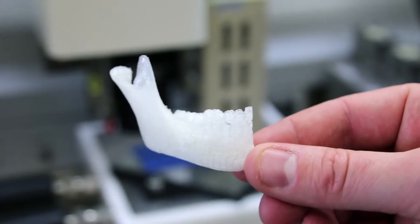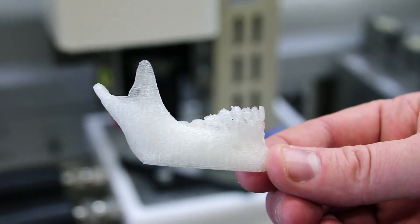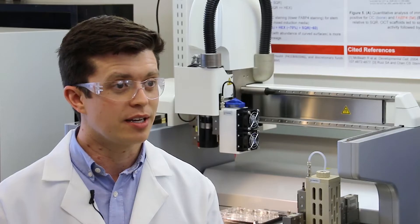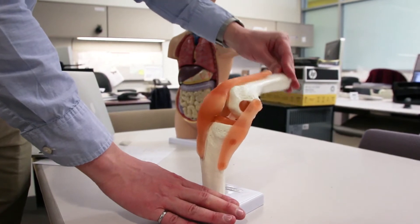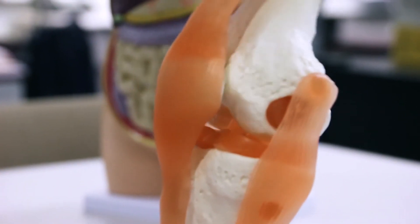With the precision of the EnvisionTech bioplotter, we can actually reproducibly print composite structures. We're looking at generating healthy cartilage and healthy bone in both young patients and aged adults.